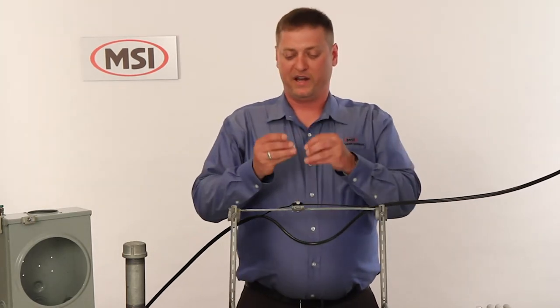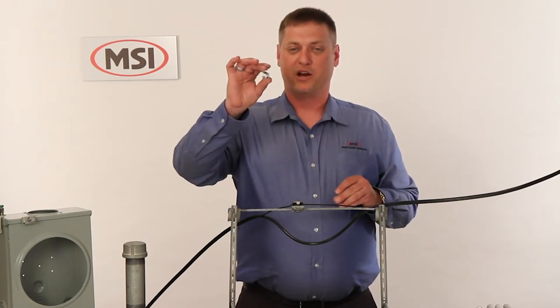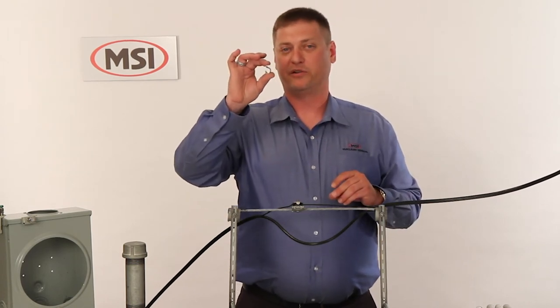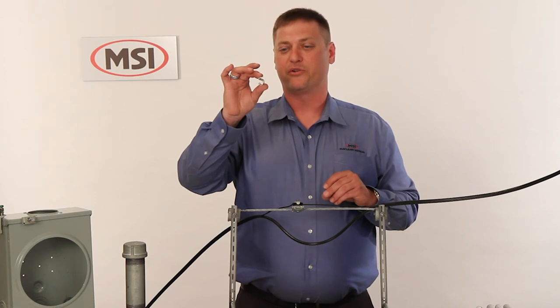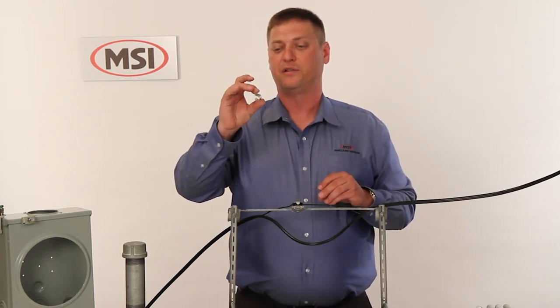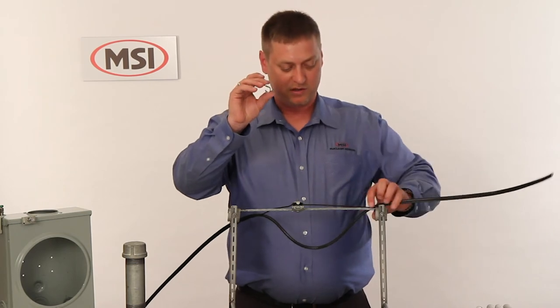The S-clips are made of dead soft aluminum and should be put on with your fingers. We do not want to use channel locks or any other tool to squeeze these on, as you can cause damage to the coax, which we're trying to avoid.